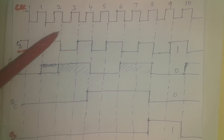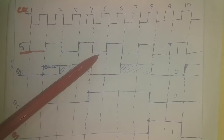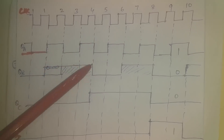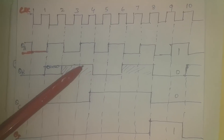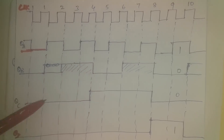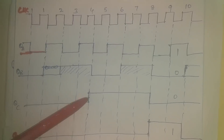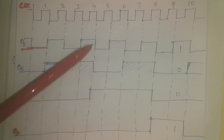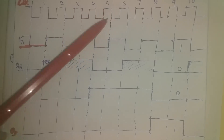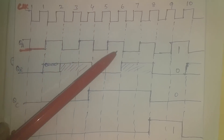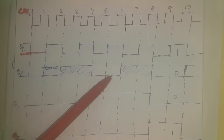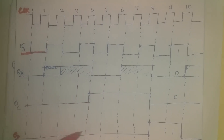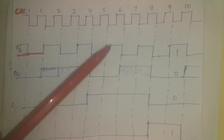At the negative edge of the fourth clock, QA toggles to low; QB transitions from high to low (zero); QC toggles and becomes high; QD continues low. At the negative edge of the fifth clock, QA transitions from zero to one; QB continues low; QC continues high (one); QD continues zero.